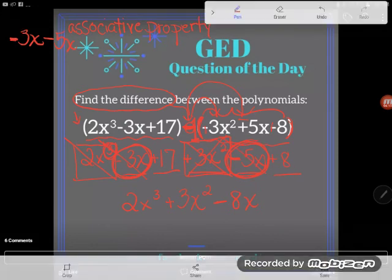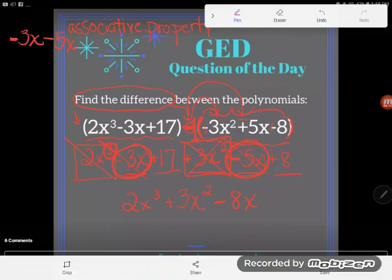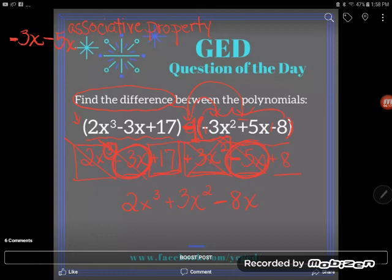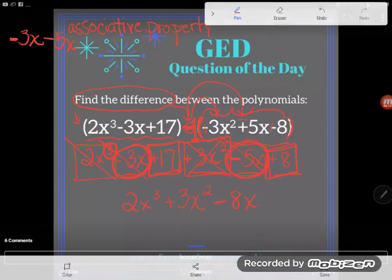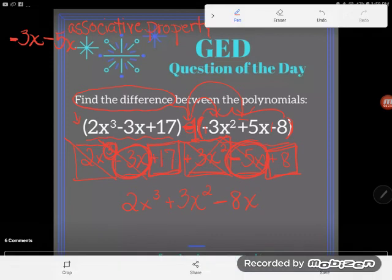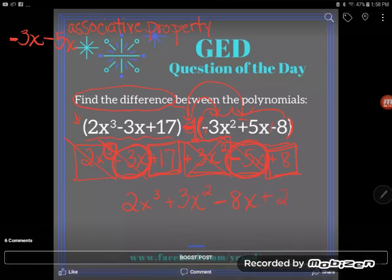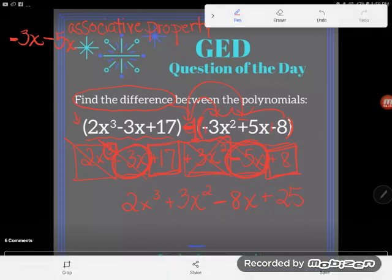Now, as always, I've always been able to add and subtract regular numbers. We call them constants in polynomials, but still regular numbers. Positive 17 plus 8 gives me positive 25. And this problem is done. I've combined all the like terms I could combine, and I'm done.